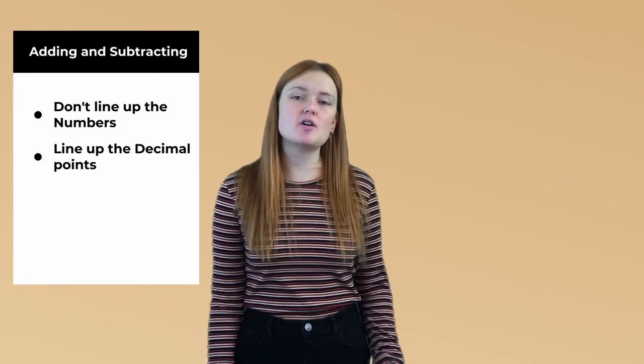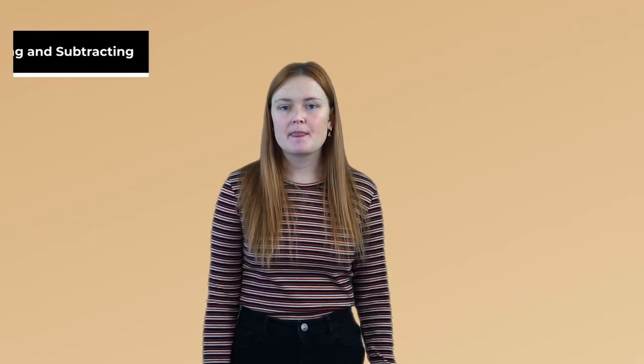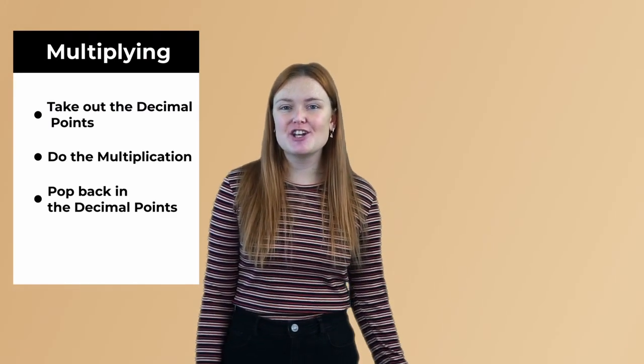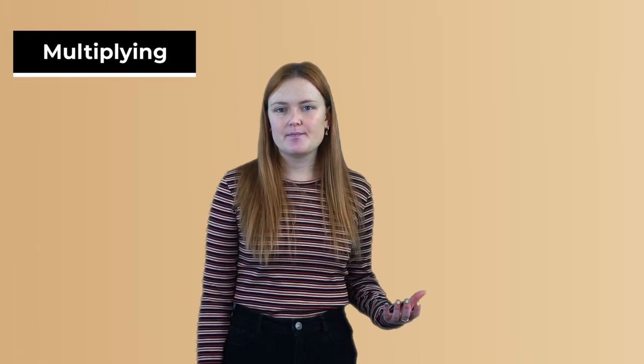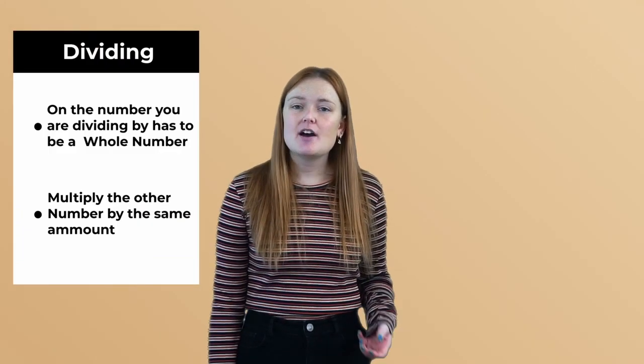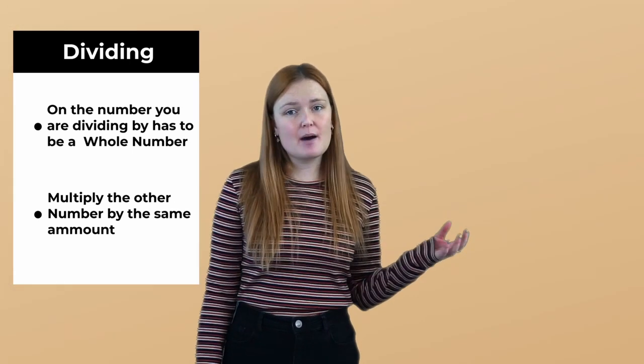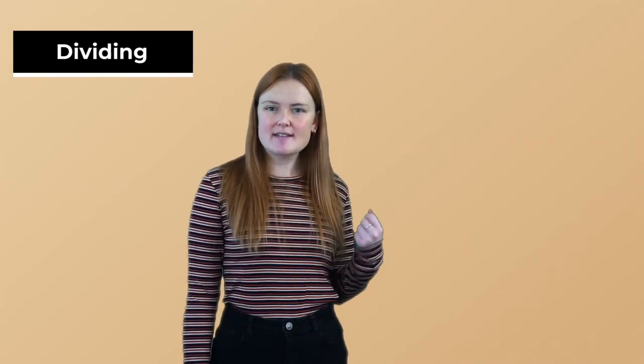So to recap, when adding and subtracting decimals, don't line up the numbers. Line up the decimal points. For multiplying, take out the decimal points, do the multiplication and then pop it back in at the end. But remember to do the right amount of spaces. For dividing, only the number you are dividing by has to be a whole number. So whatever you multiply that by to make it a whole number, just do the same to the other number. Then you don't need to change your answer.